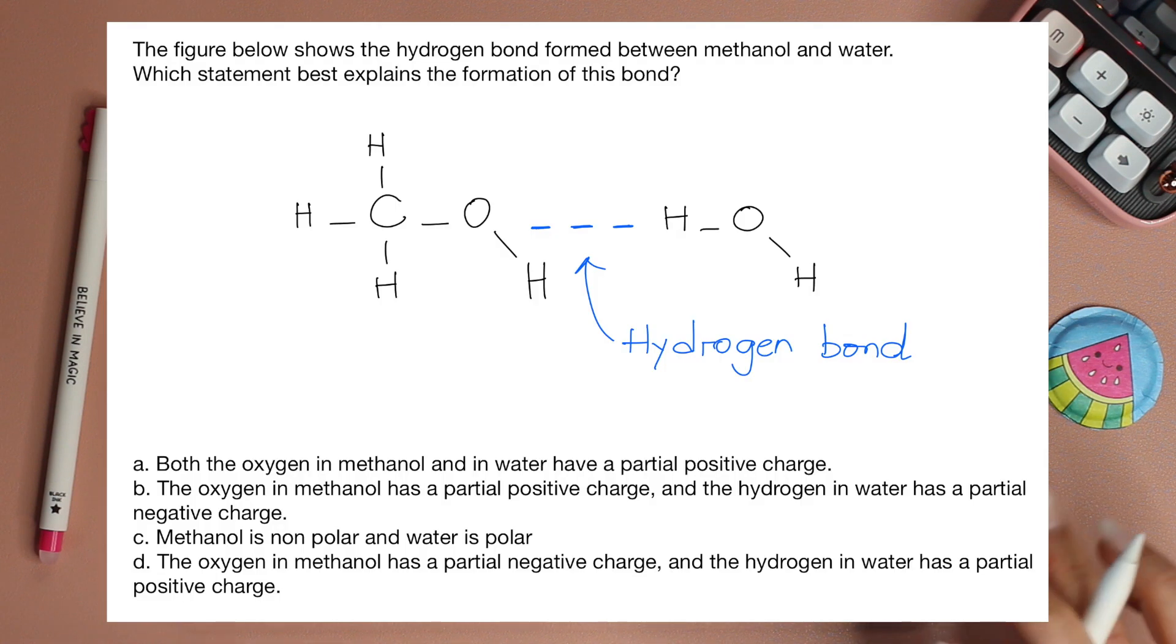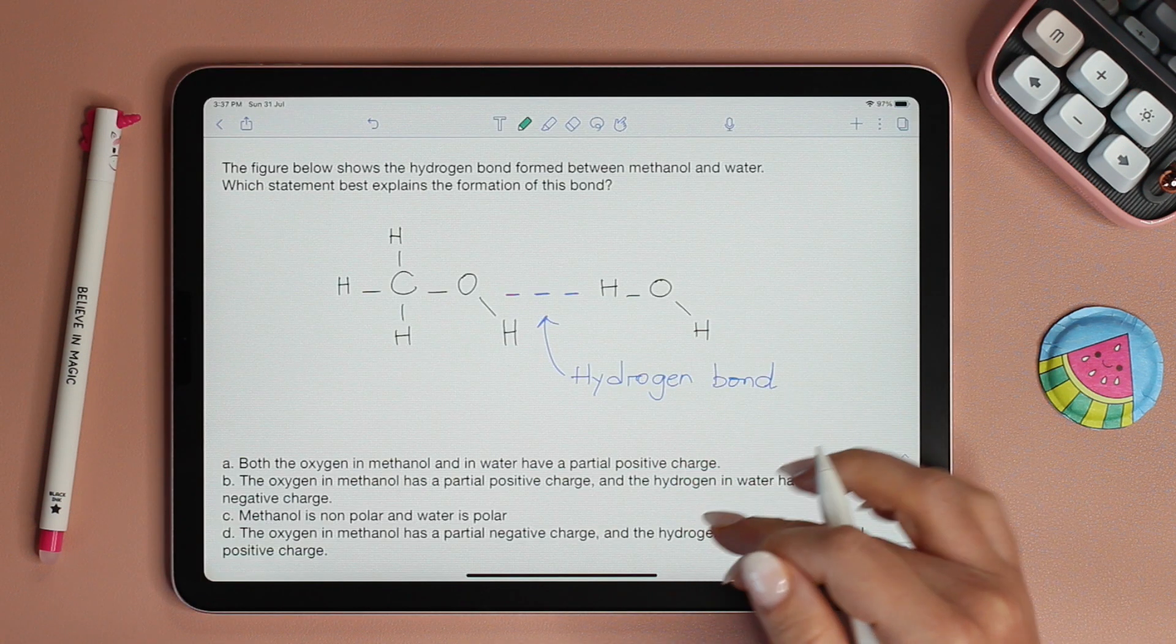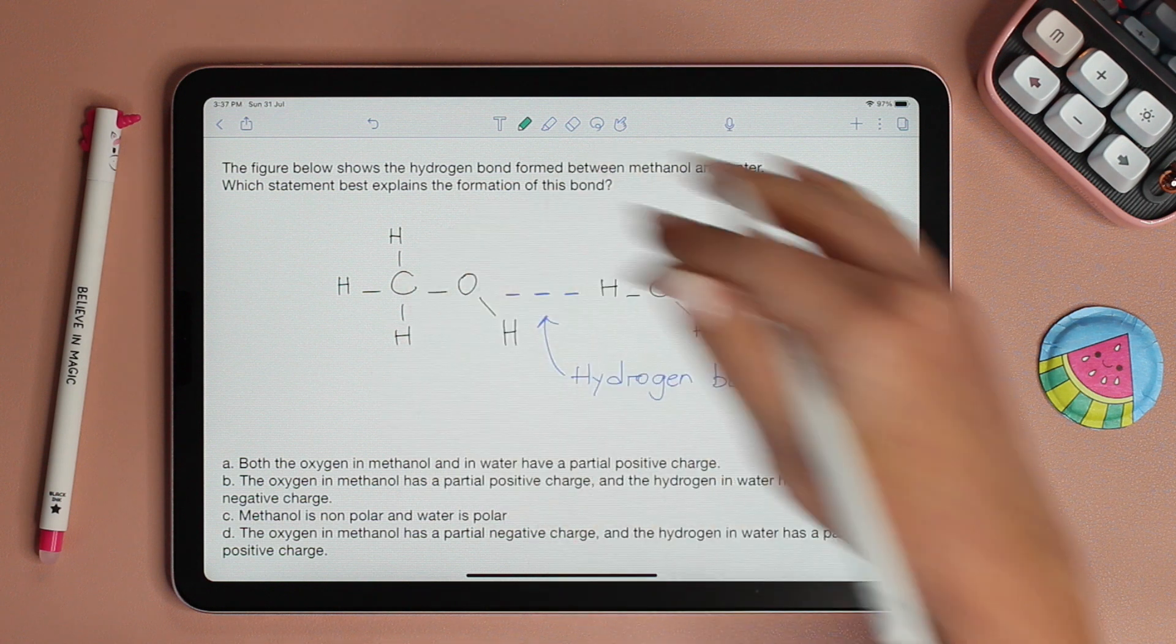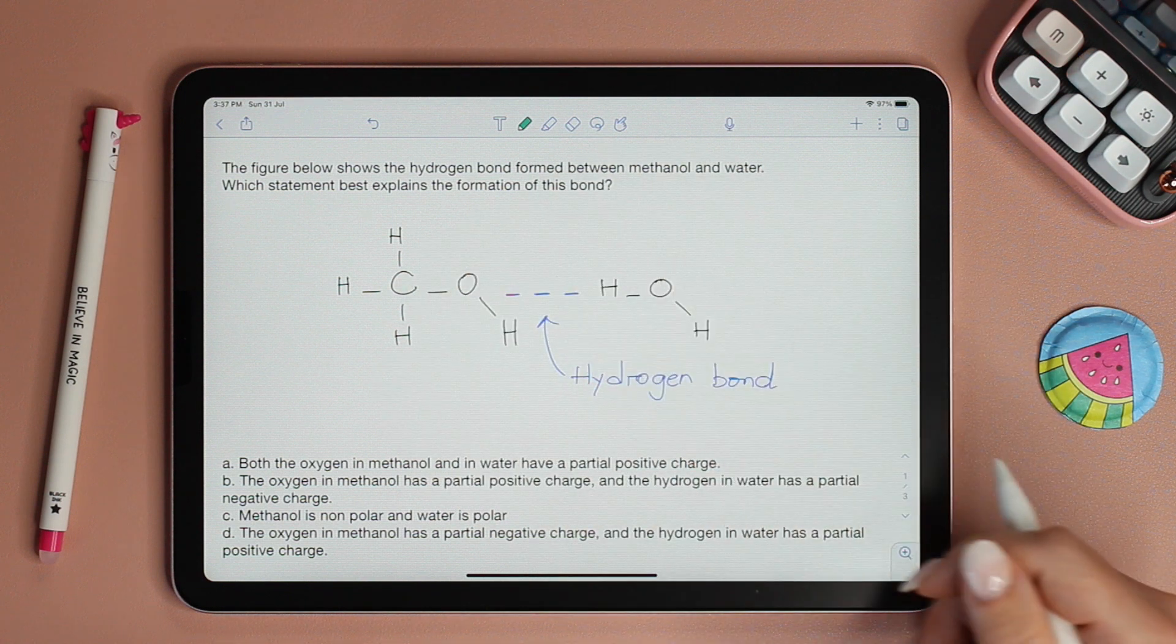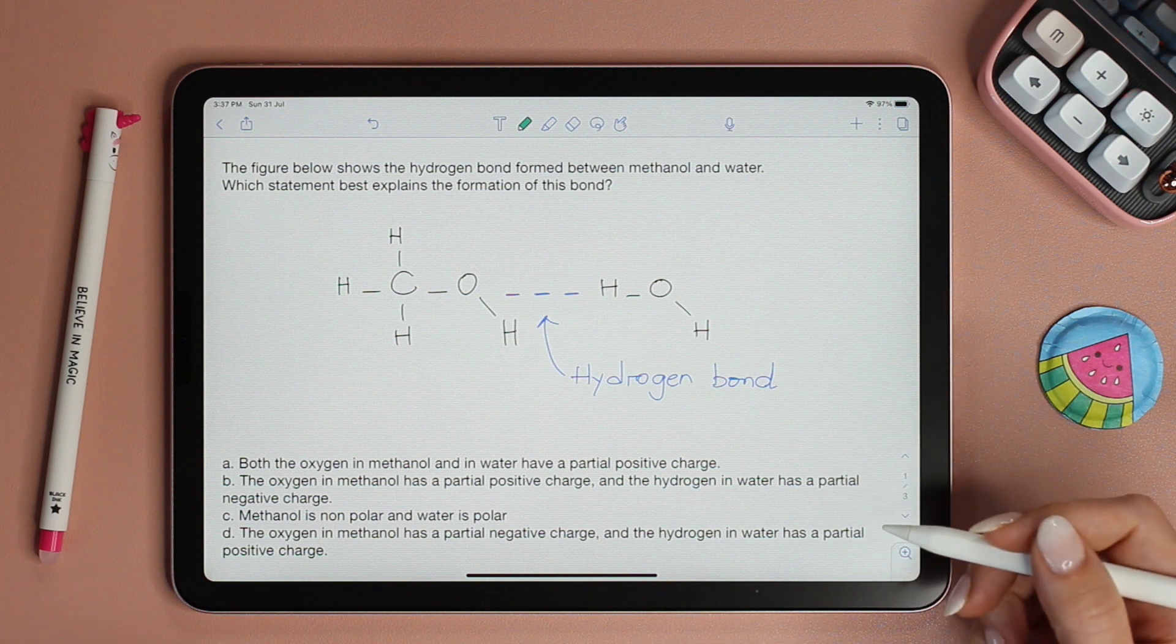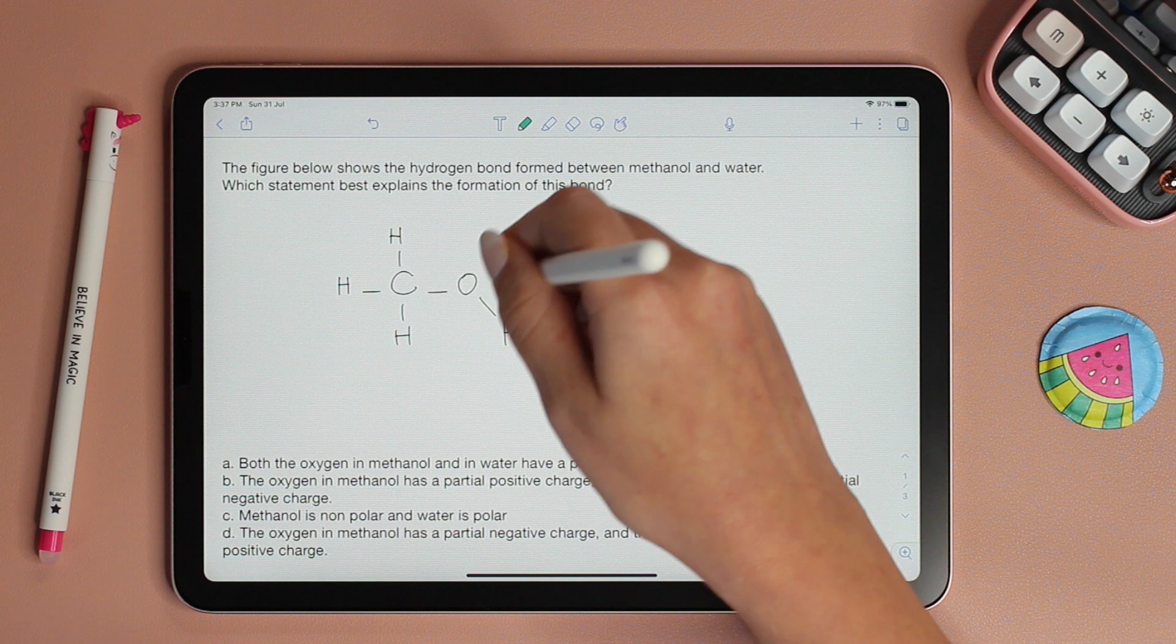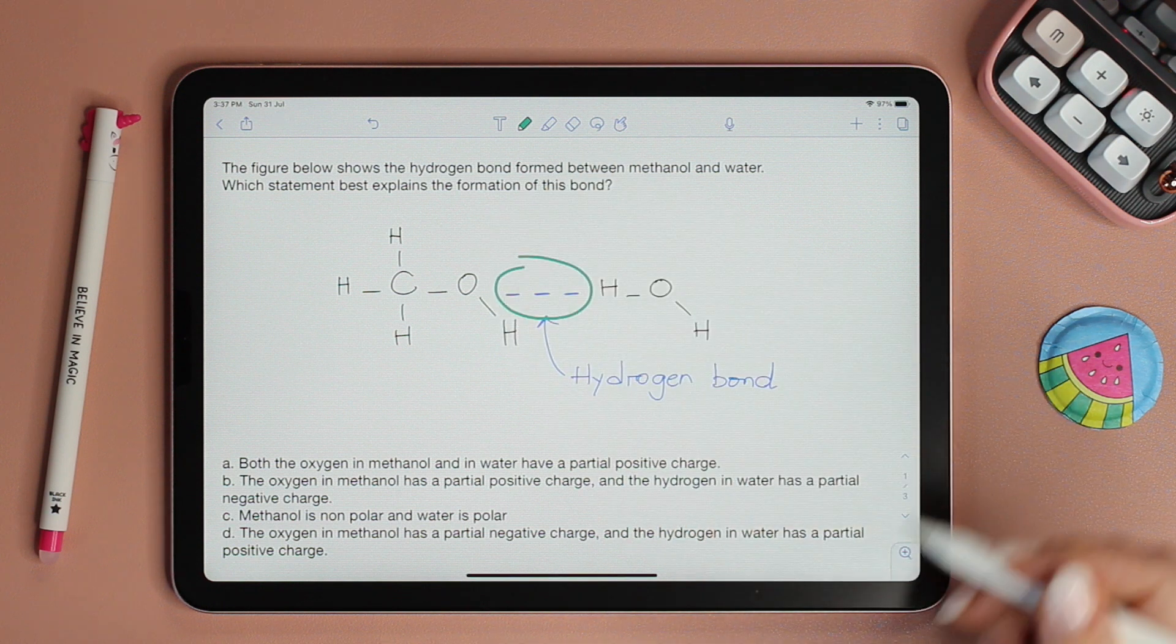I want you now to pause the video and try to answer the question. My advice is before even reading the choices, look at what you have. You have hydrogen bond, there's water, methanol. So we're asked to see which statement best explains why this bond was even formed.